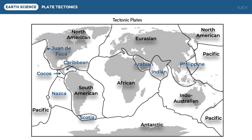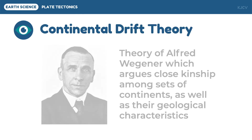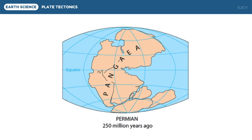The movement of these tectonic plates is theorized as the continental drift theory, postulated by Alfred Wegener. He argued that the continents originally came from one big landmass, based on the geological characteristics of these continents. This big landmass is a supercontinent called Pangea. Pangea was a supercontinent during the Permian period of the Paleozoic Era.